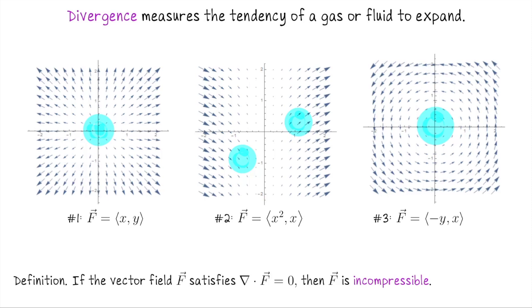We saw that curl measured the tendency of a vector field to spin. Divergence measures the tendency of a vector field to expand. So we think of our vector field as modeling a gas or a fluid. Would we observe expansion, contraction, or compression? Or maybe we wouldn't observe either of that behavior? So first let's just look at these three vector fields, and with our eyes determine if we would expect this blob of fluid to expand one second later, contract, or stay the same.